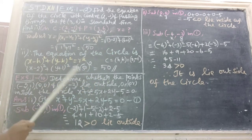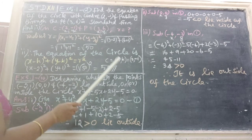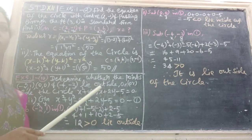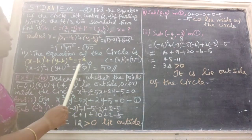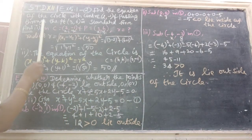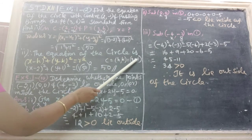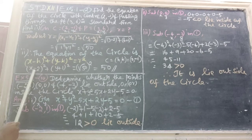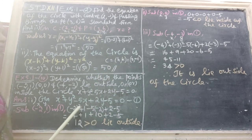Therefore, the equation of the circle is x minus h whole square plus y minus k whole square equals r square. Here, given C equals 2 comma minus 1, which is h comma k. Substitute here: we get x minus 2 whole square plus y plus 1 whole square equals 50.